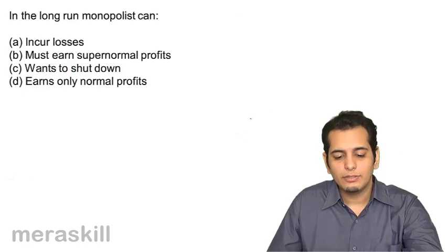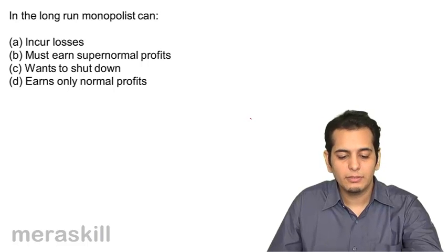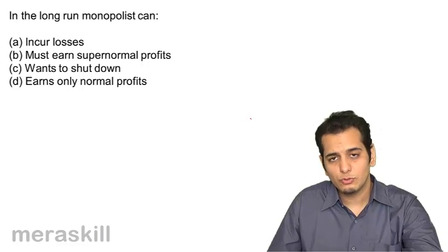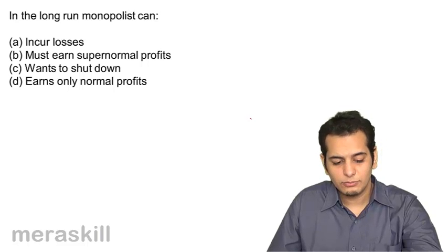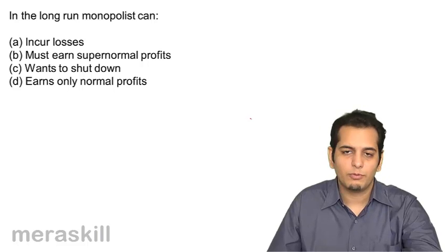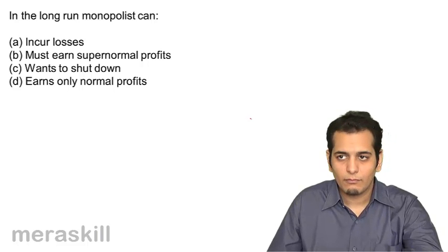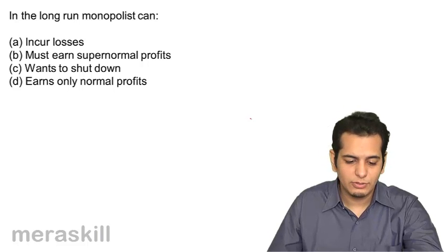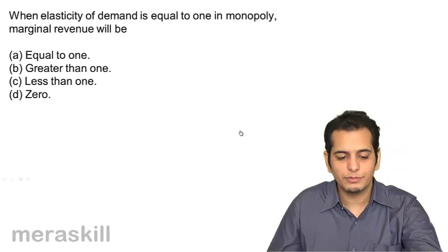Third, in the long run a monopolist can: a) incur losses, b) must earn supernormal profits, c) wants to shut down, d) earns only normal profits. The answer is b) earns supernormal profits.